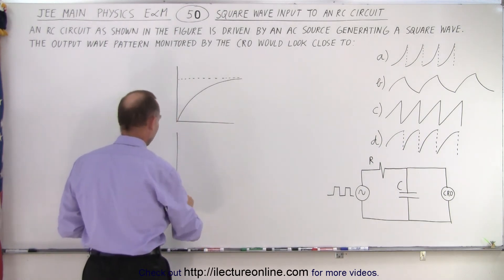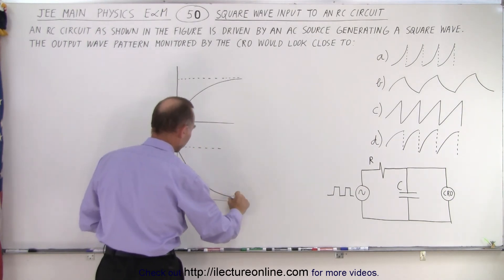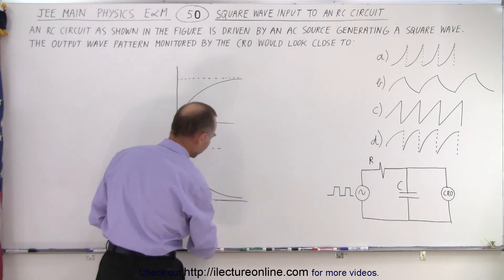And if we have voltage across the capacitor and it discharges, it will look like this. So if this is the initial voltage, the discharging capacitor, voltage across the capacitor will look like this.